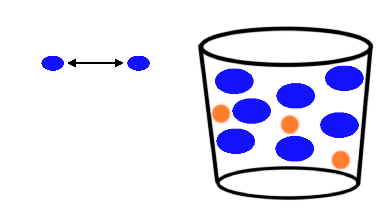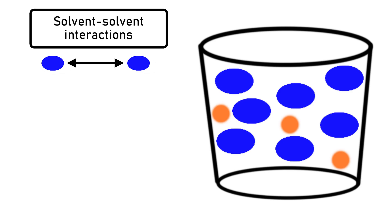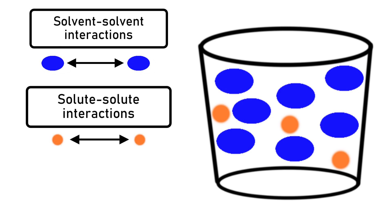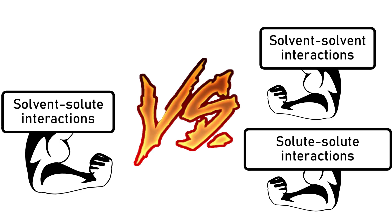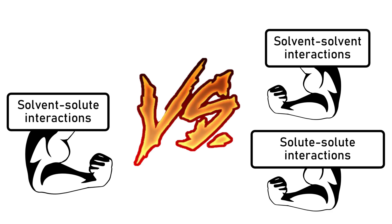When a solute is added to a solvent, there are three types of intermolecular forces present: attractions between solvent particles themselves (solvent-solvent interactions), attractions between the solute particles themselves (solute-solute interactions), and attractions between solvent and solute particles (solvent-solute interactions). Whether or not a solution will form depends on the strength of the solvent-solute interactions compared to the strength of the solvent-solvent and solute-solute interactions.